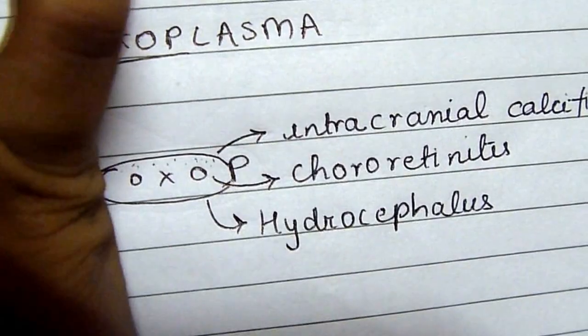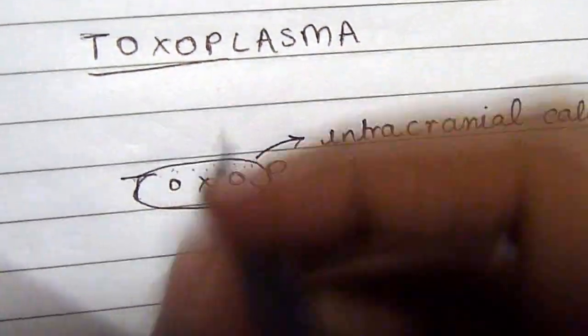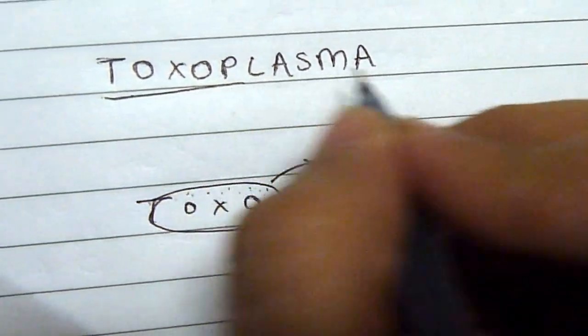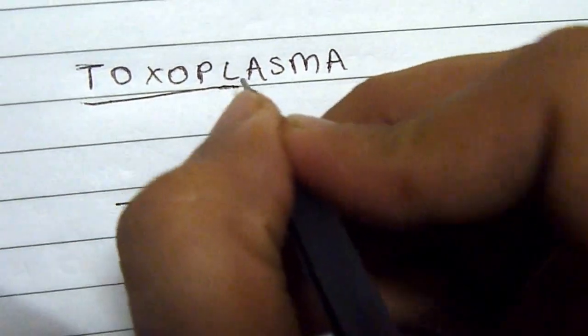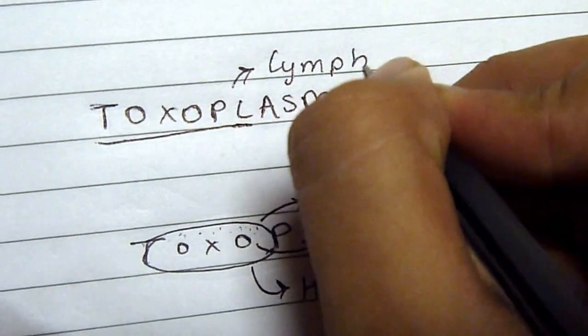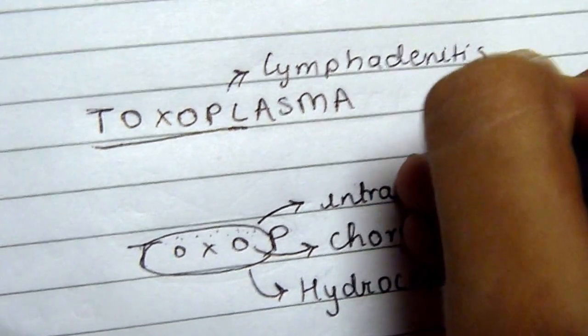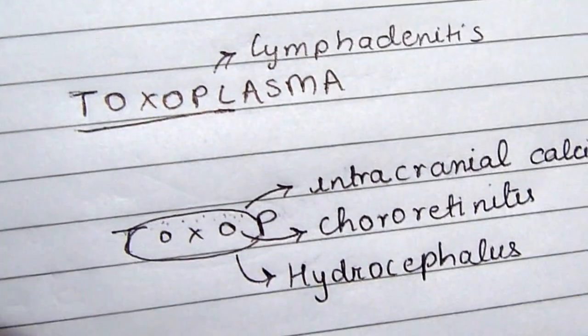Now we're going to talk about how they present in adults. After T-O-X-O-P comes L, and L is for lymphadenitis. This is usually seen in pregnant women who are infected with toxoplasmosis.